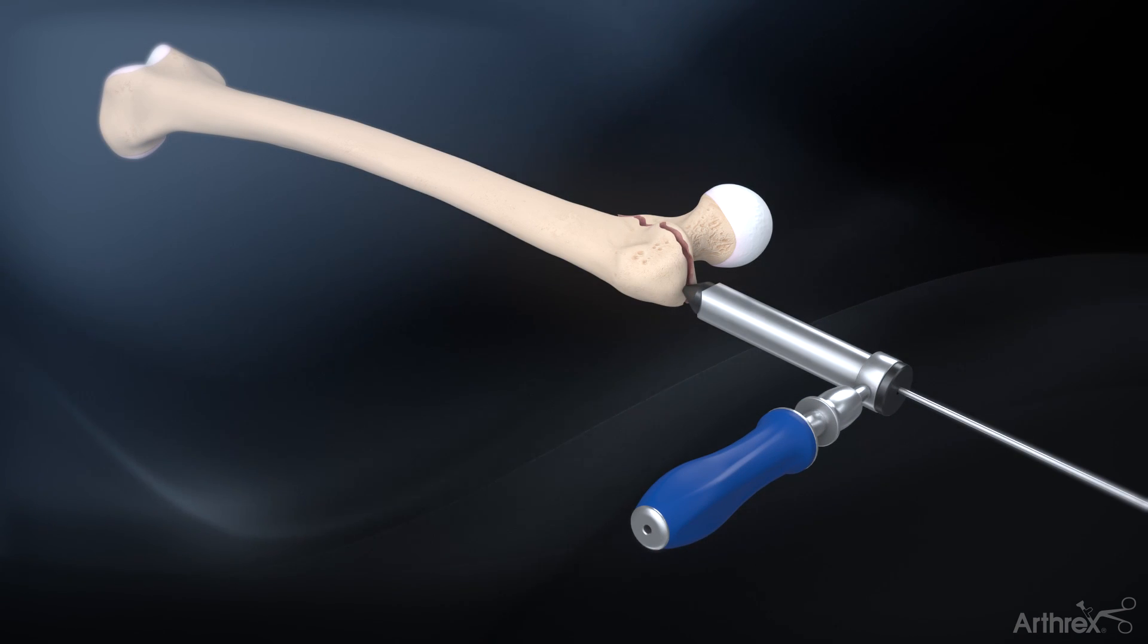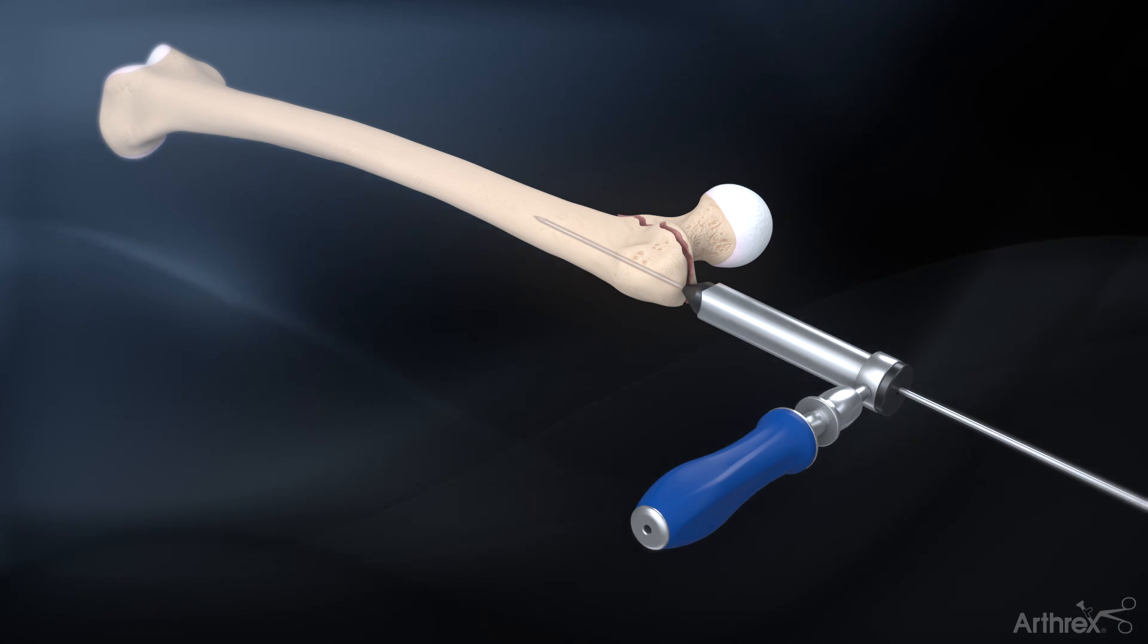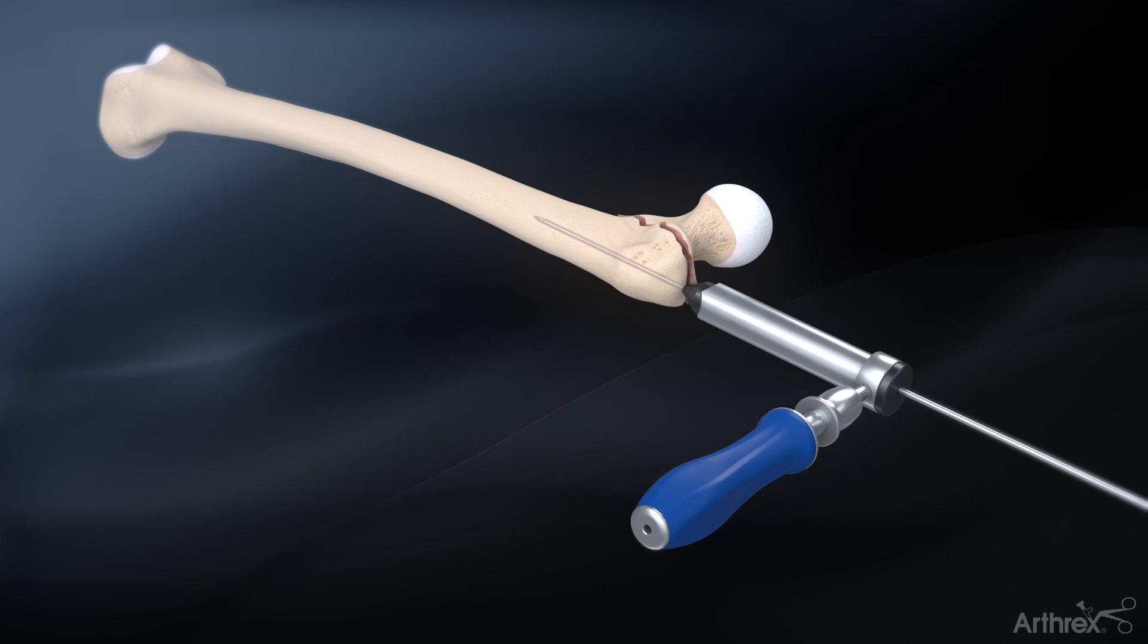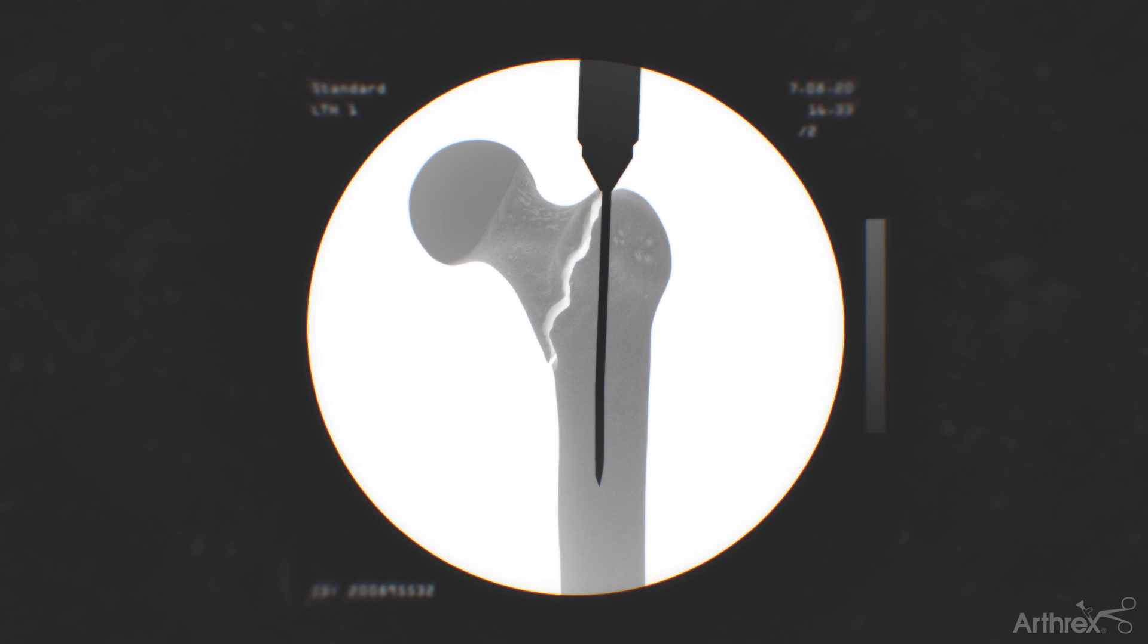Insert the 3.2 mm guide pin through the soft tissue protector and aim towards the central axis of the femoral shaft. Advance at least to the level of the lesser trochanter. The pin trajectory is verified through fluoroscopy.